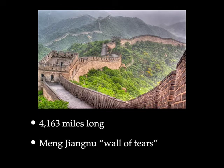It was essentially a sentence of death. Meng Jiangu was so distraught that she broke down and cried, and her cries were so strong and powerful that many miles of the wall collapsed around her. Hence the name that people in China often use to refer to this place as the wall of tears, because it reminds people of the huge cost of its construction and maintenance.